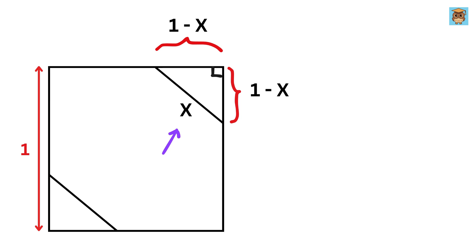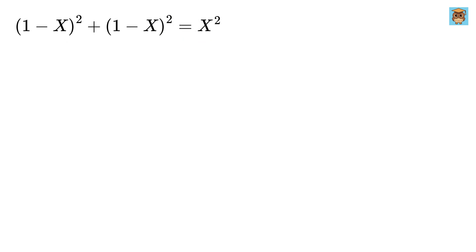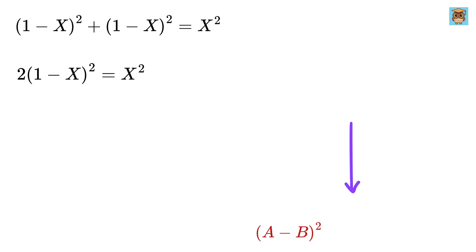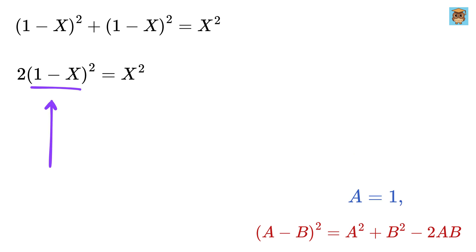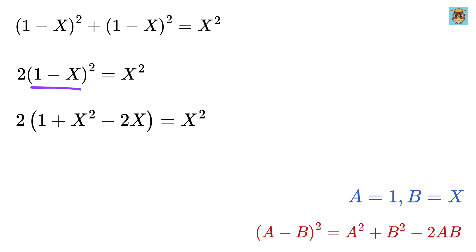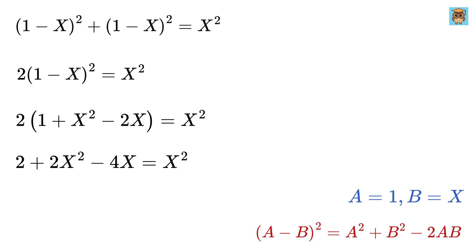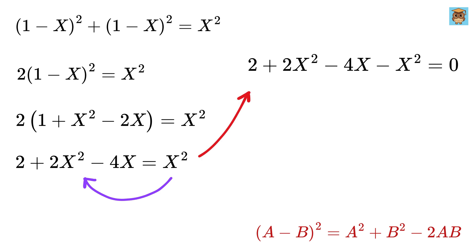We can use the Pythagorean theorem to get (1 minus X)² plus (1 minus X)² equals X². Since we are adding (1 minus X)² twice, this becomes 2 times (1 minus X)². Expanding using the (A minus B)² formula, where A is 1 and B is X, gives 1 plus X² minus 2X. Multiplying by 2 gives 2 plus 2X² minus 4X, so X² equals 2 plus 2X² minus 4X, which rearranges to X² minus 4X plus 2 equals 0.